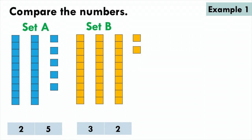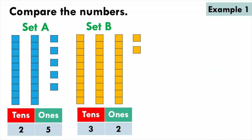We have set A and set B. Set A has 25 cubes and set B has 32 cubes. I can split these numbers into tens and ones, so 25 has 2 tens and 5 ones, and 32 has 3 tens and 2 ones.